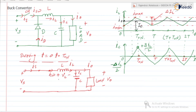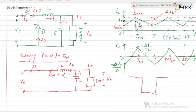In all converters — buck, boost, or buck-boost — we assume that the load voltage is constant and the load current is also constant, i.e., ripple-free. In the case of a step-down chopper, the V0 waveform was pulsed (VS then 0 then VS again). To average that waveform, we connect an inductor, a diode, and a capacitor. If the switching frequency is increased, we get constant load current and constant load voltage.